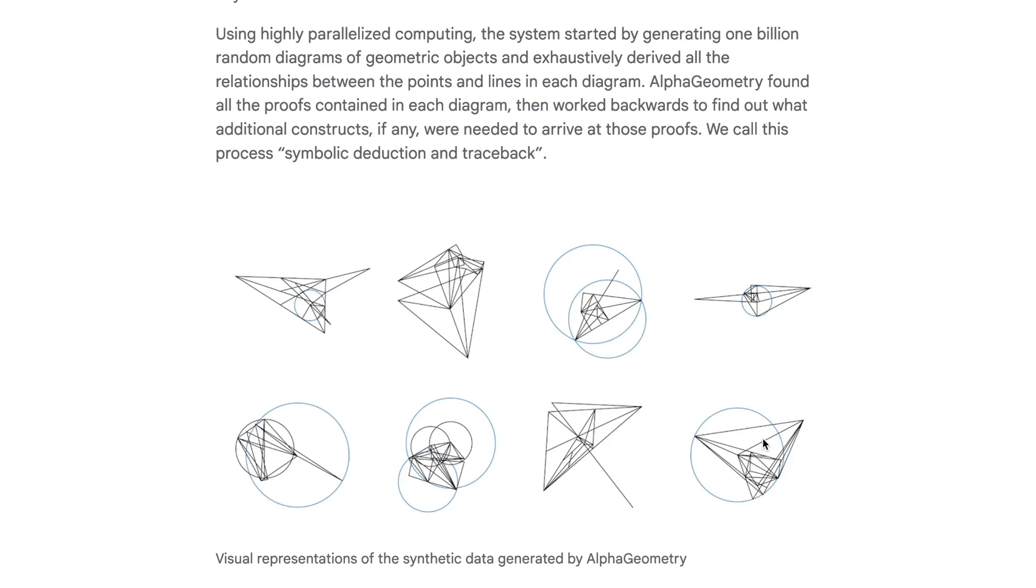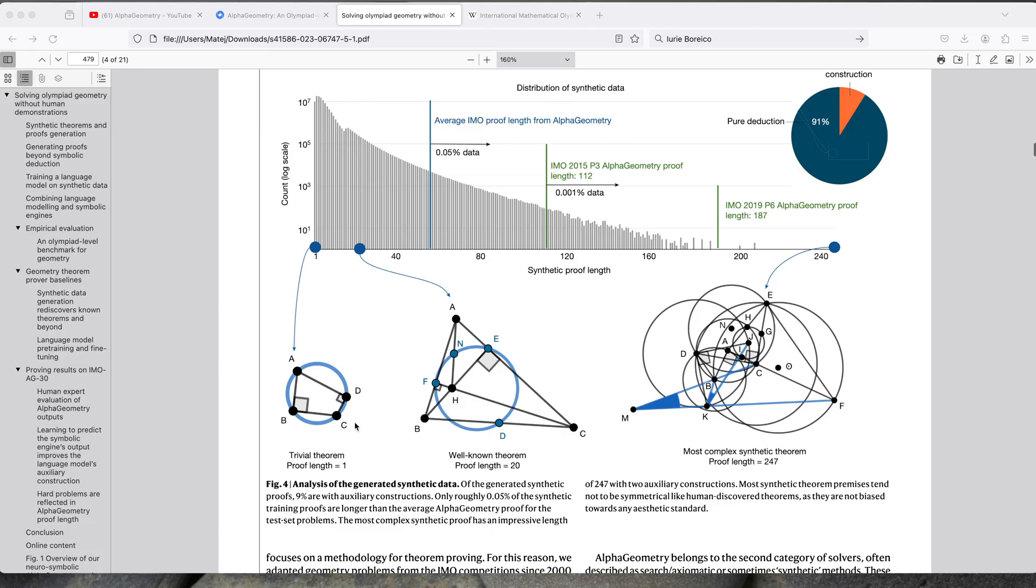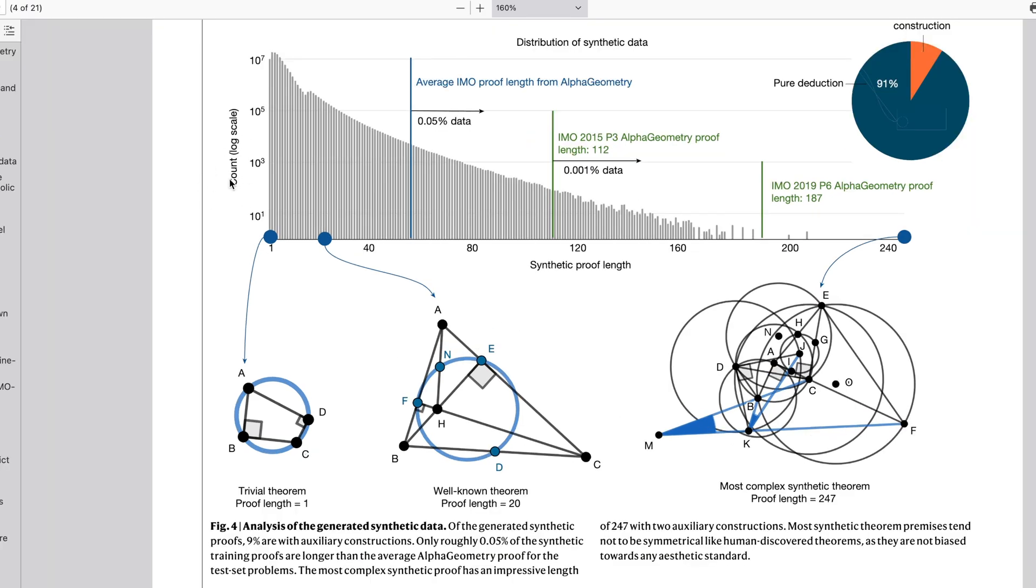And I wonder if this can translate to other domains. Here in figure 4, we have analysis of all the synthetic data they generated that was then used to train AlphaGeometry. On the y-axis, we have the count of the synthetic examples. Note that this is a log scale. And then on the x-axis, we have the length of the synthetic proof. So it generated a lot of very simple proofs like this one right here, but they did get nice distribution of really complex proofs. So this was the most complex one with proof length of 247. And they put a couple lines in here.